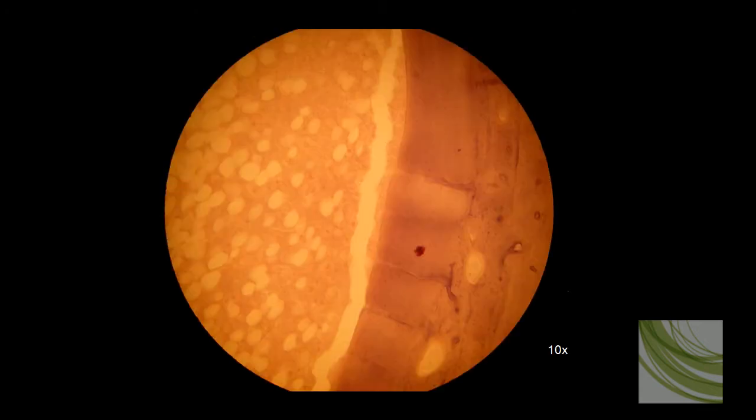Here is the same slide using the 10X objective. Here is the spongy or cancellous bone. This would be marrow cavity. These are adipocytes. There are quite a few in here.